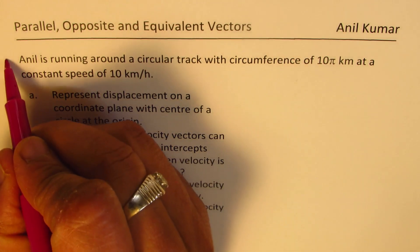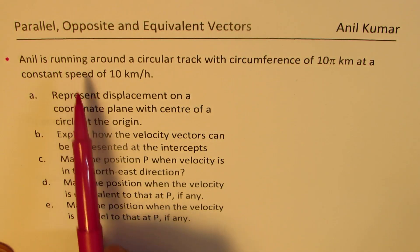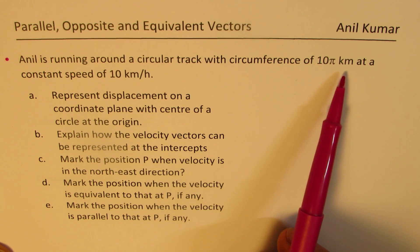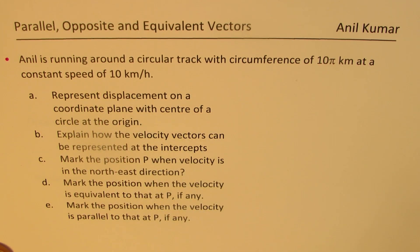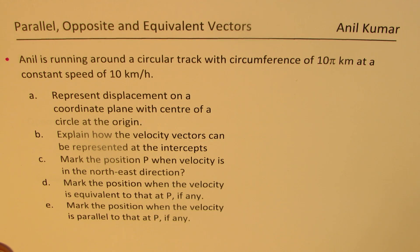The second question for you is: Anil is running around a circular track with circumference of 10 pi kilometers at a constant speed of 10 kilometers per hour. Represent displacement on a coordinate plane with the center of the circle at the origin. Explain how the velocity vectors can be represented at the intercepts. Mark the point P when velocity is in the northeast direction. Mark the position when the velocity is equivalent to that at P, if any. Mark the position when the velocity is parallel to that at P, if any.